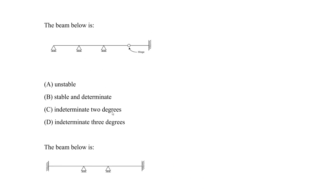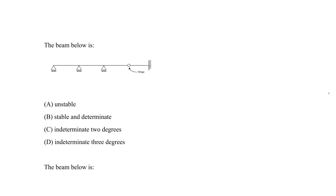Now let's look at this beam. First, let's find the R value. Rollers only support vertical reactions in the Y direction, so we have R1, R2, and R3. For the hinge, similar to a pin, it supports no moment but has a vertical reaction R4 in the Y and a horizontal reaction R5 in the X.